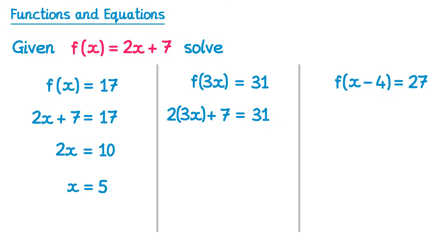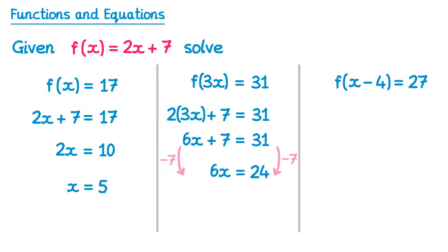Let's solve this equation. We multiply out the bracket first: 2 lots of 3x is 6x, plus 7 equals 31. We take 7 from both sides, giving 6x = 24, then divide both sides by 6, leaving x = 4.